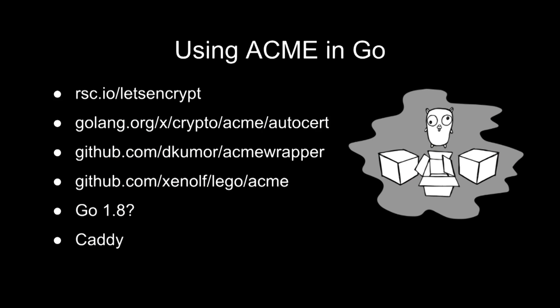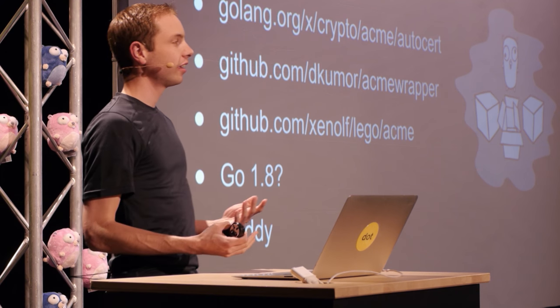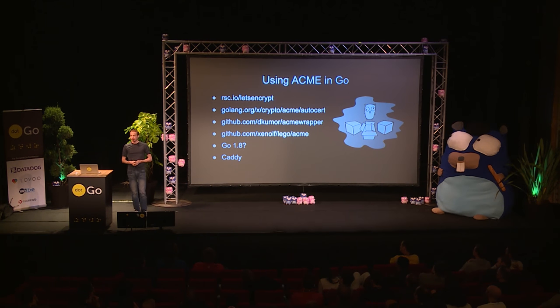So how does this actually look in a Go program? I'll show you a few packages you can use — these are ACME clients that serve various purposes. You'll also see that Go 1.8 with a question mark is on this list. Recently, a proposal was raised to vendor ACME support directly into the Go standard library, so that when you call http.ListenAndServe, for example, it would serve over HTTPS by default. The proposal has been shelved for now, but I'll show you a concrete example using Caddy, a web server written in Go, so you can get a vision for what's possible.